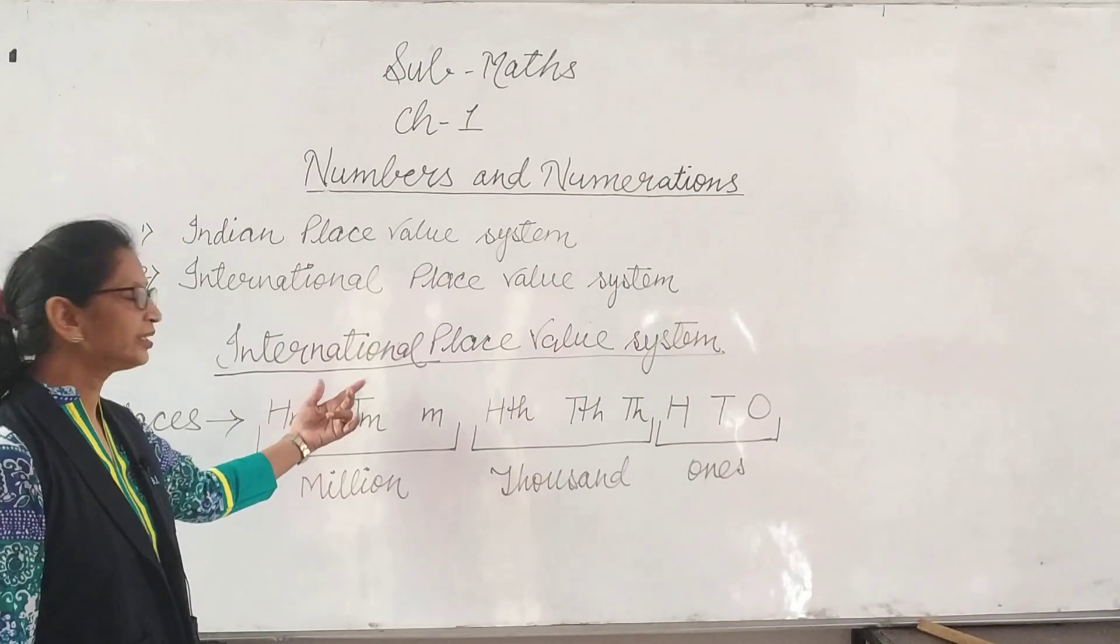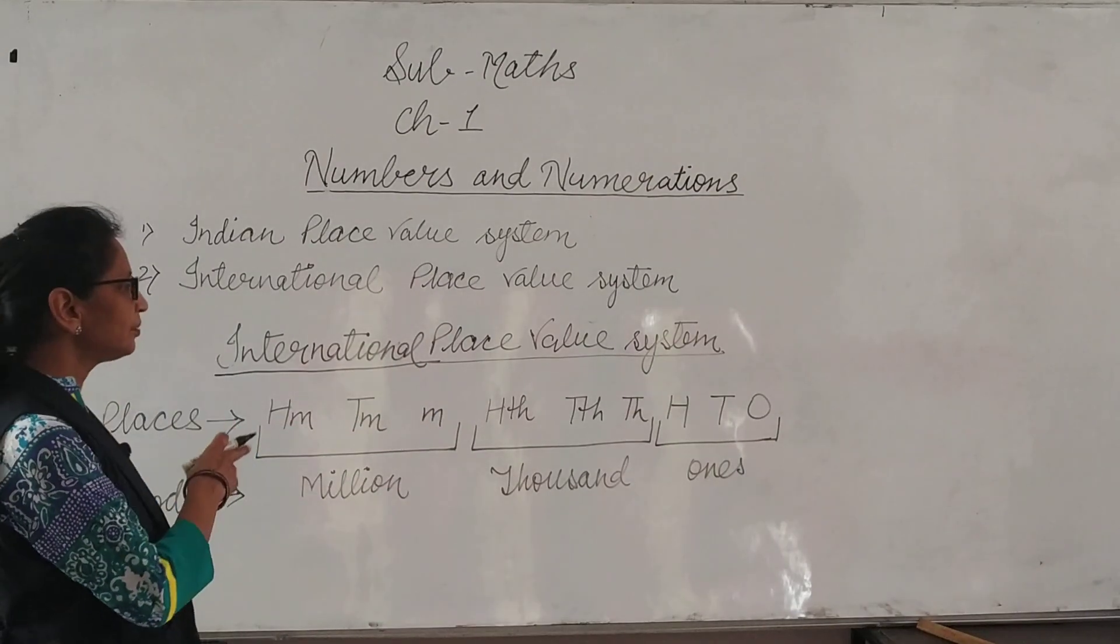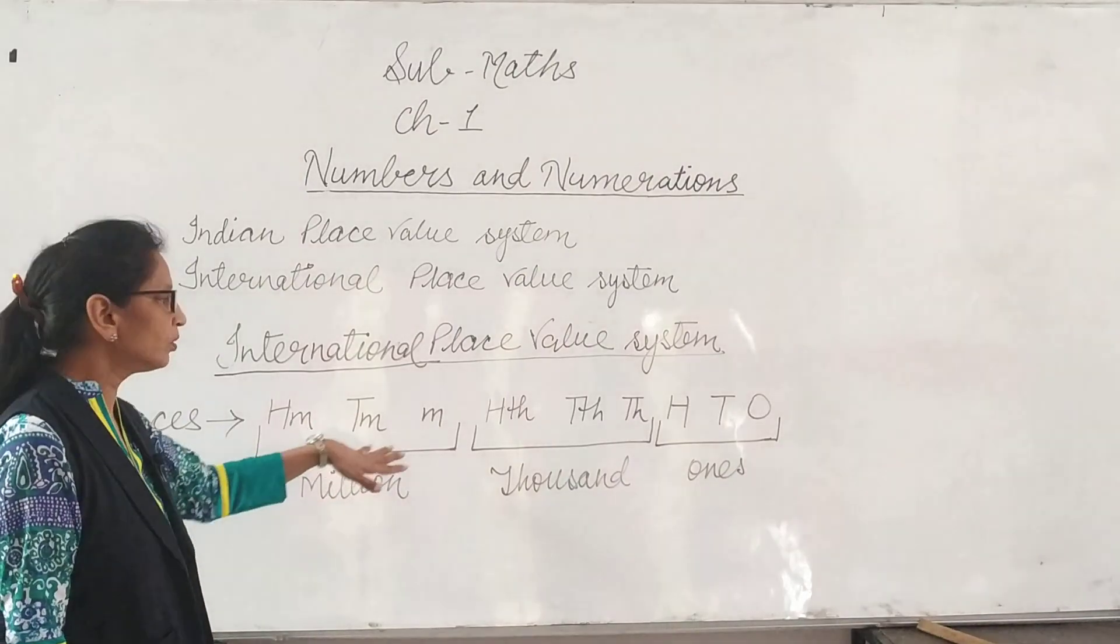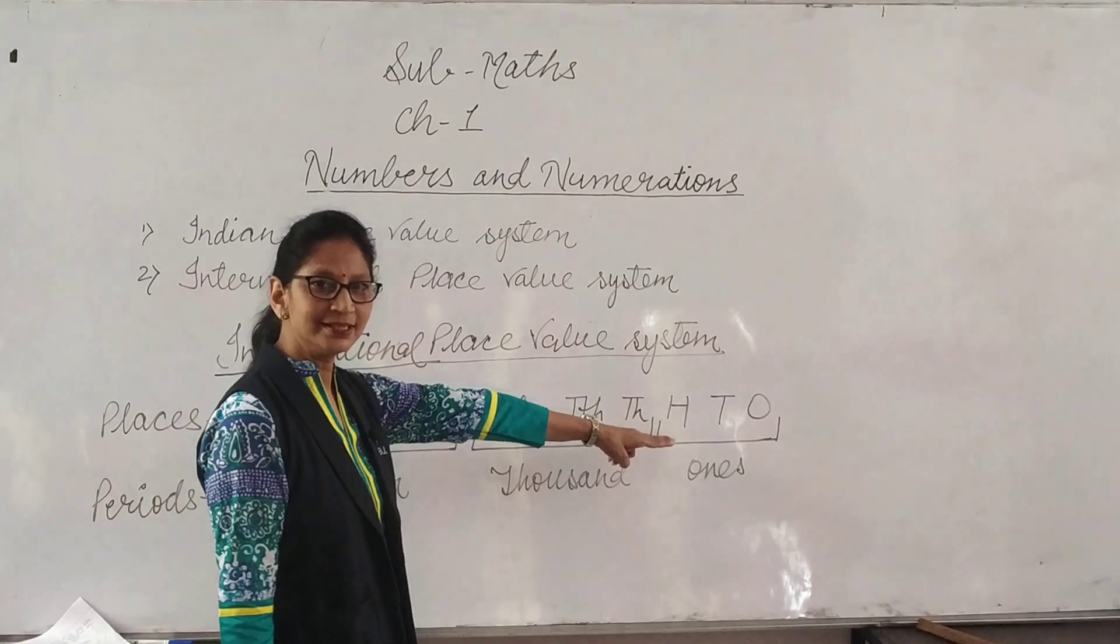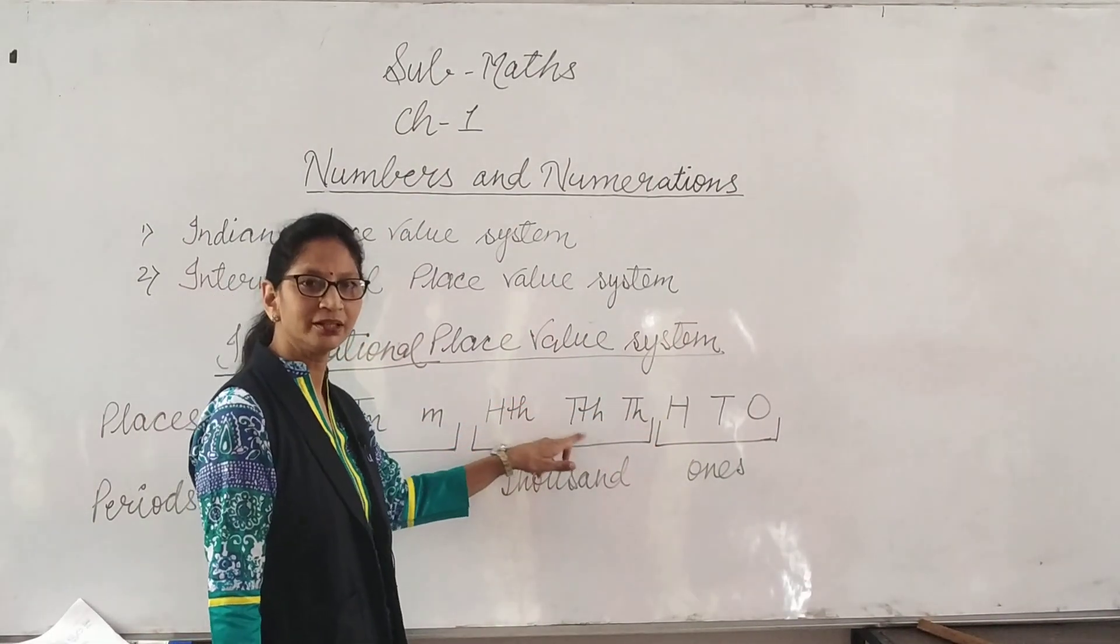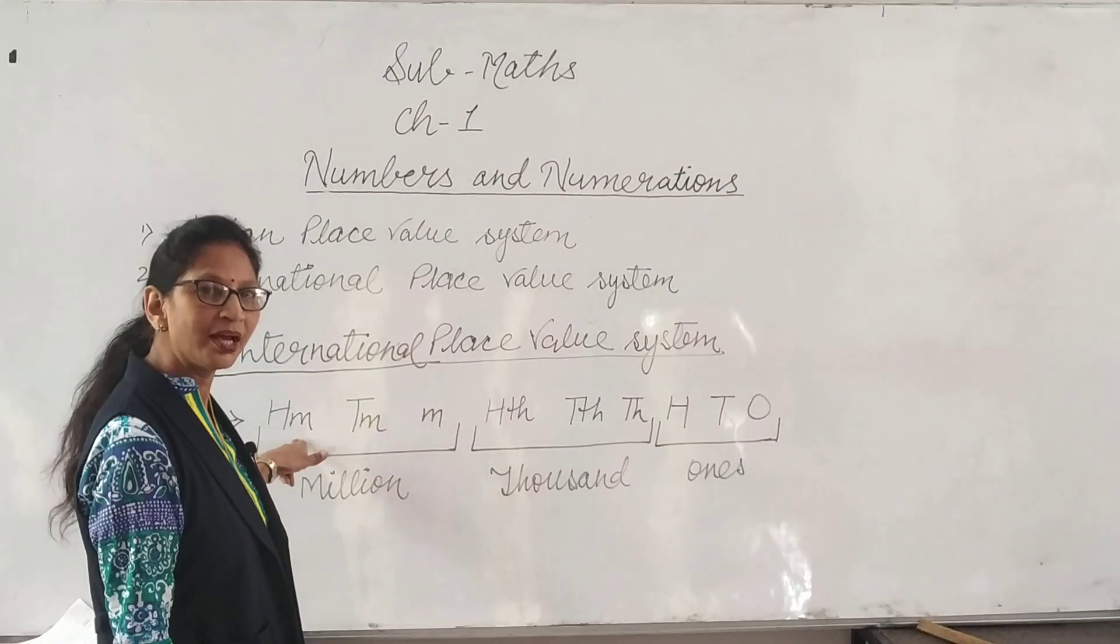Now, we are talking about International Place Value System. In International Place Value System, there are also nine places here: ones, tens, hundred, thousand, ten thousand, hundred thousand, million, ten million, and hundred million.